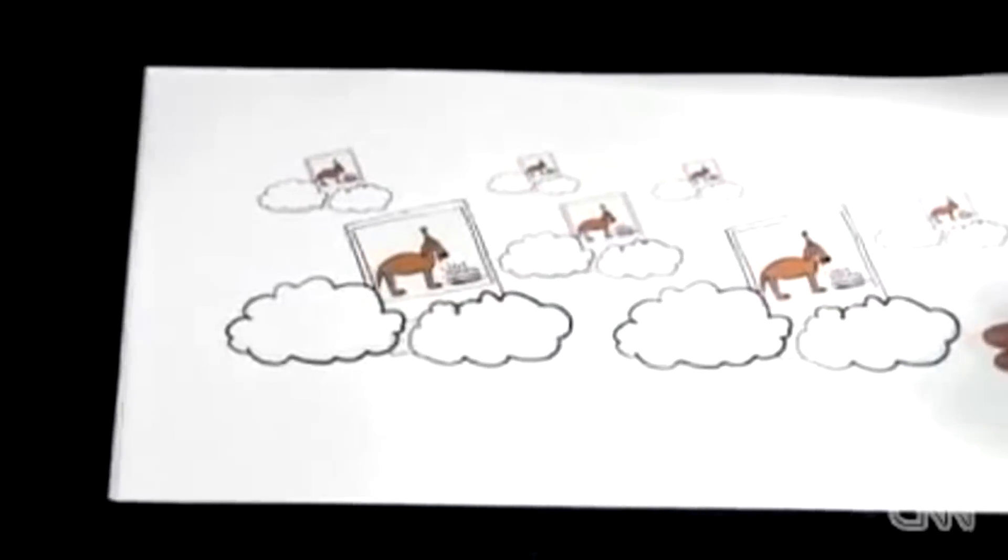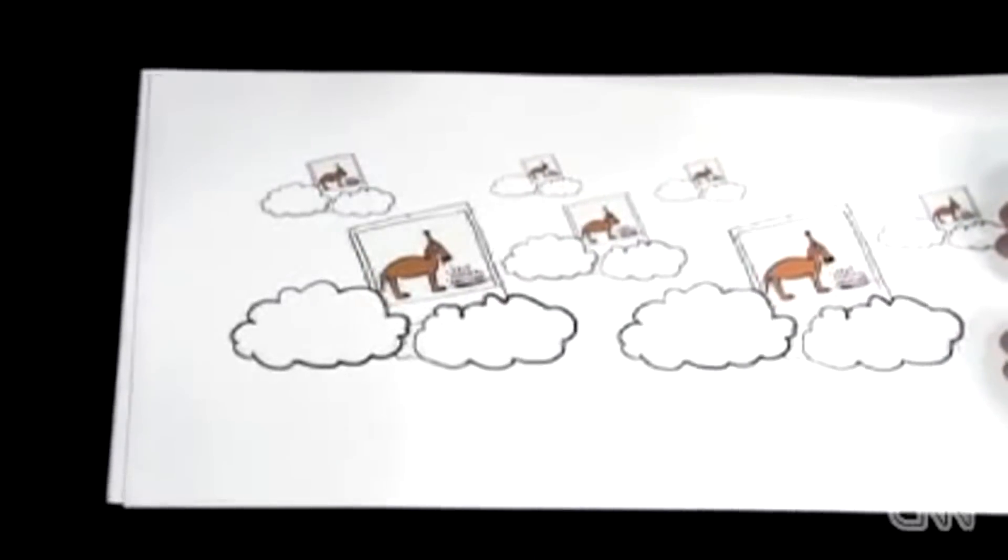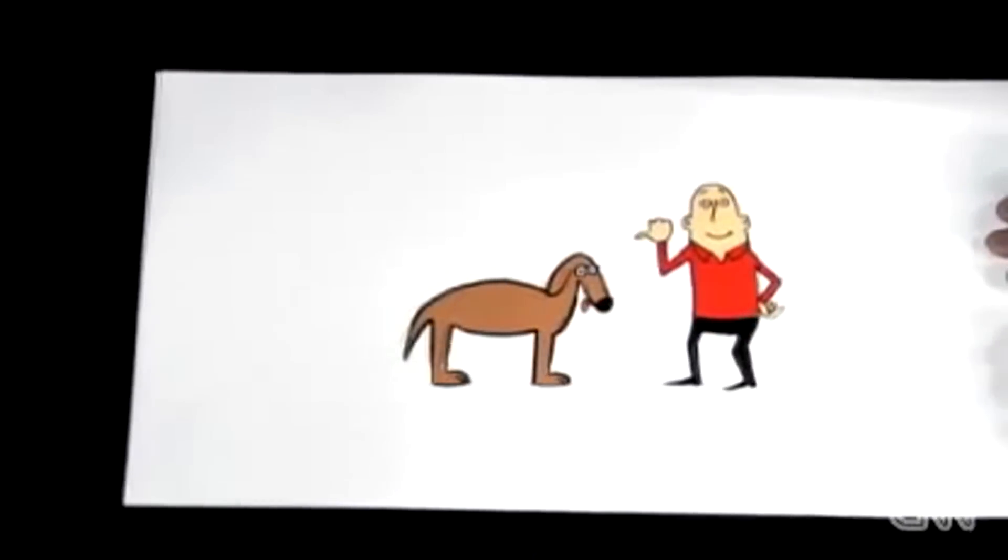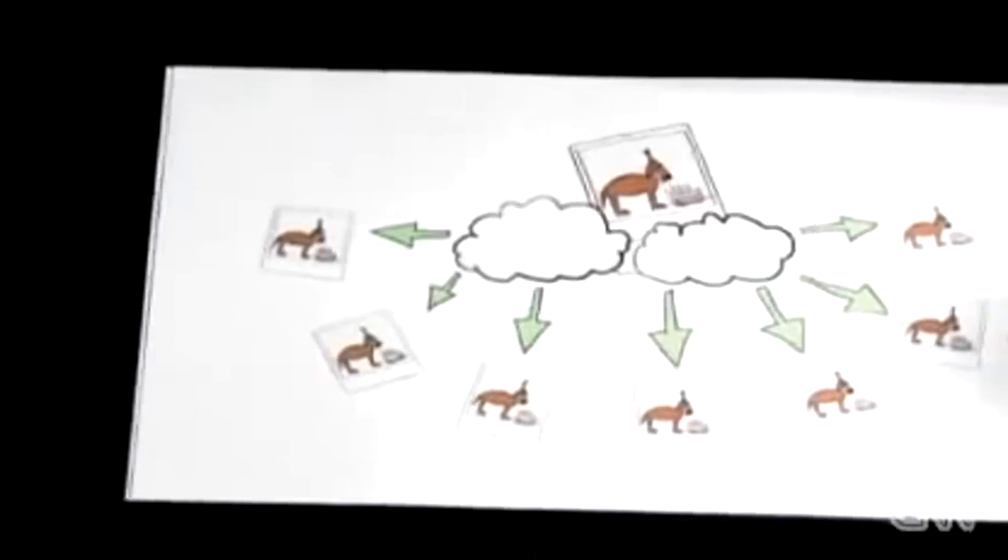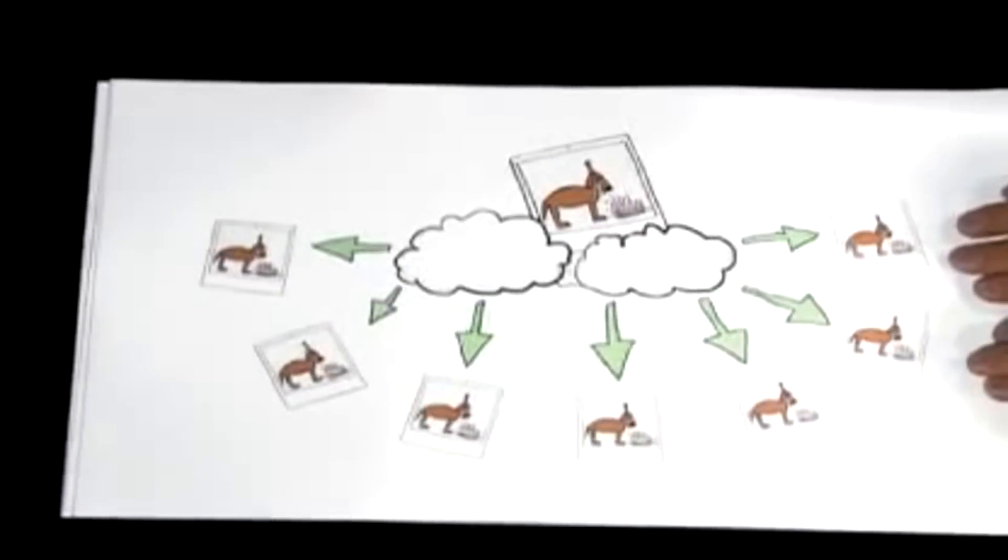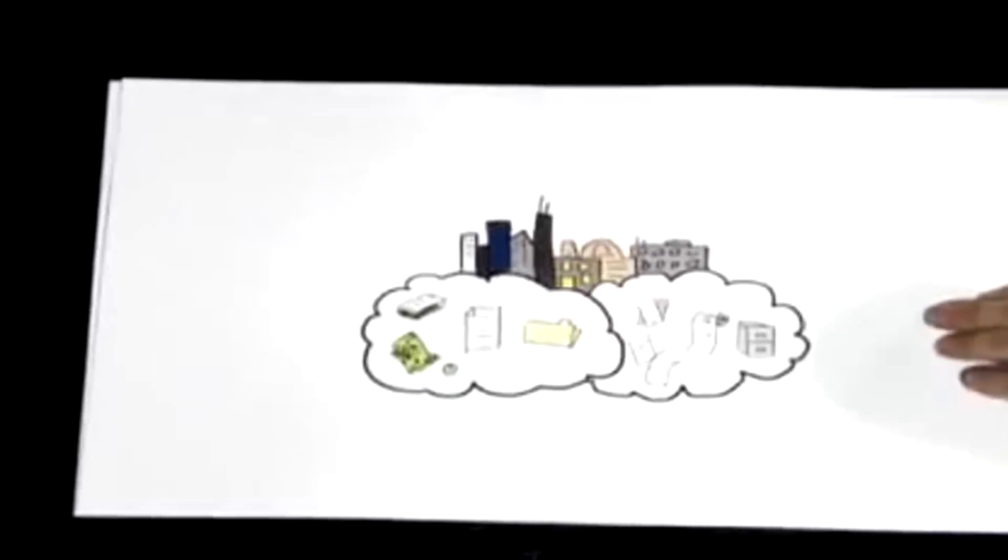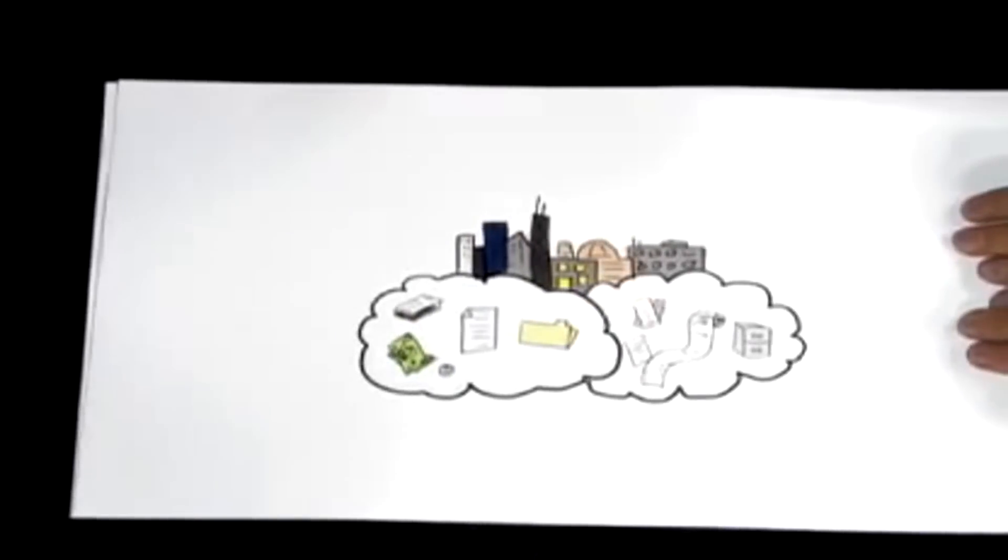But when Frank's in the cloud, he's stored not just in one place, but all over the place. So you're less likely to lose him. You also can access Frank's photo from anywhere. You can send a link to some of your friends, so they can see Frank too. That's just one of the many powers of cloud computing, and it's not just you and Frank. Entire businesses are running in the cloud.